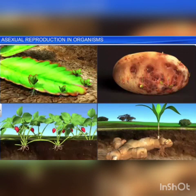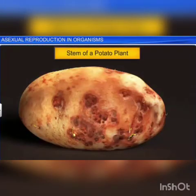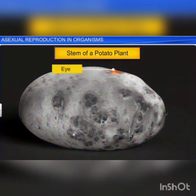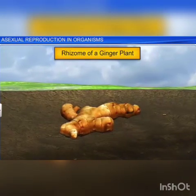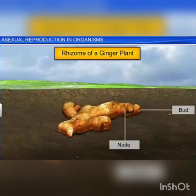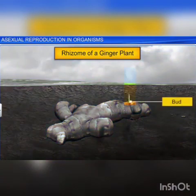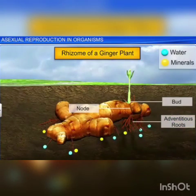In higher plants, asexual reproduction, commonly known as vegetative propagation, takes place through vegetative propagules — specialized structures which emerge from different parts of the plant. For instance, the stem of a potato plant is dotted with buds known as eyes, which later germinate into new plants. Whereas in a ginger plant, modified stems or rhizomes having nodes and buds act as a means of vegetative propagation. While the buds develop into a new ginger plant, the nodes of the rhizome give way to adventitious roots, which help in the absorption of water and minerals from the soil.